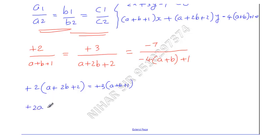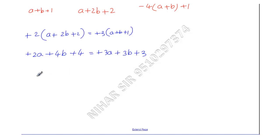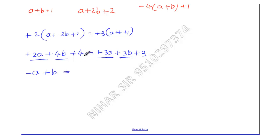Expanding: 2A + 4B + 4 = 3A + 3B + 3. Collecting like terms: 2A - 3A gives -A, and 4B - 3B gives +B, and 3 - 4 gives -1. So we get -A + B = -1 as Equation 1.